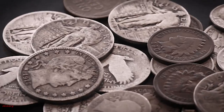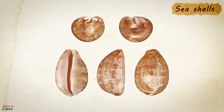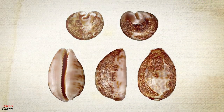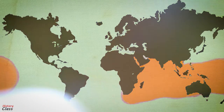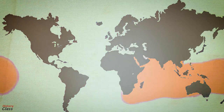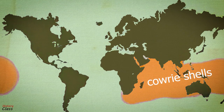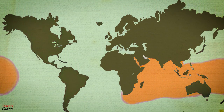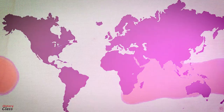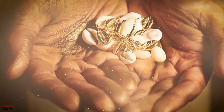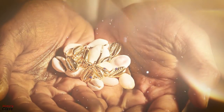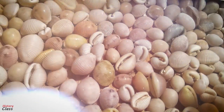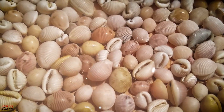Before coin money was invented, seashells were a medium of exchange. The shells were used as jewelry, and many societies in South Asia and Africa used cowry shells as currency until the 20th century. Because of this, cowry shells were not only known as the longest used currency in history, but also the most widely used.